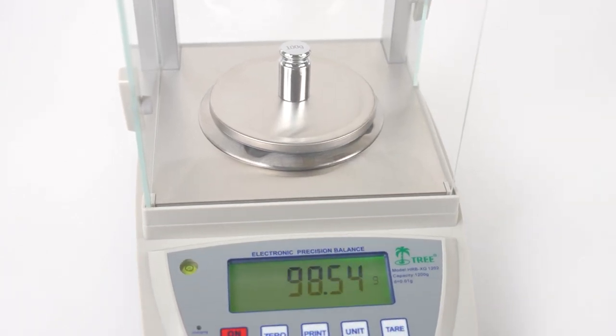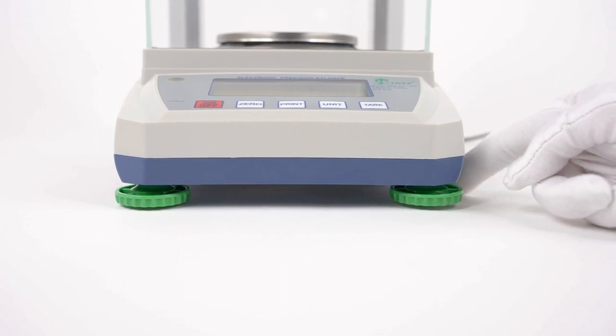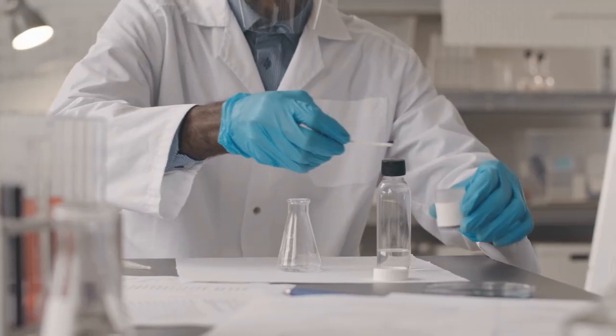The HRB-XG is a series of state-of-the-art, high-resolution balances for weighing chemicals and fine powders.